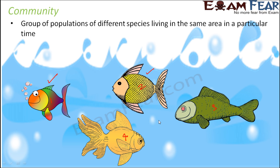When we say interact, this interaction could be of many types. It could be an interaction where two populations or two organisms are helping each other. It could be an interaction where organisms are harming each other. It also could be an interaction where one organism is eating up the other organism. But since all these different populations are living in the same area, there is obviously interaction between them — and this constitutes a community.